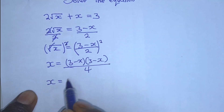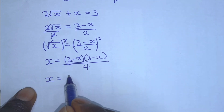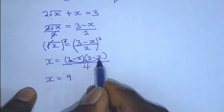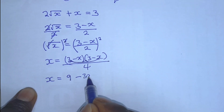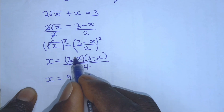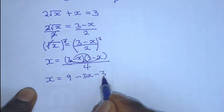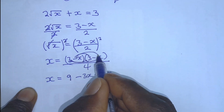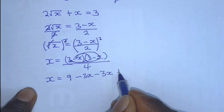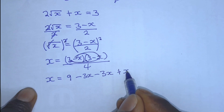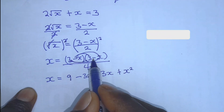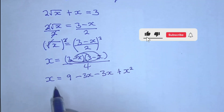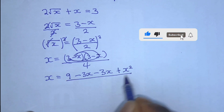So, x is equal to: 3 times 3 gives us 9; 3 times minus x gives us minus 3x; minus x times 3 gives another minus 3x; and minus x times minus x gives positive x squared — because negative times negative is positive — all over 4.